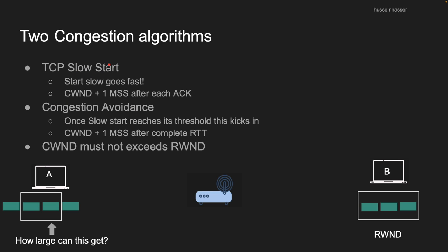The slow start is called slow start because we start from one — where the congestion window is one MSS, maximum segment size. We start very slow, but the slow start algorithm actually increases the window size aggressively and exponentially. How does that work? Every acknowledgement we receive, we add one. So if you sent 10 packets and got 10 acknowledgements, you get 10 MSS sizes added to your congestion window.